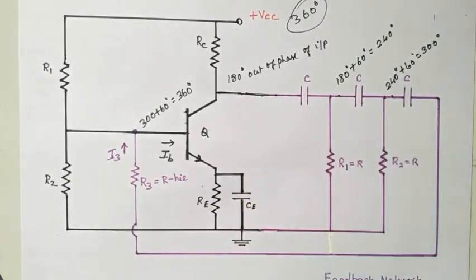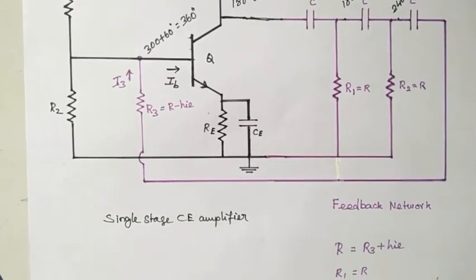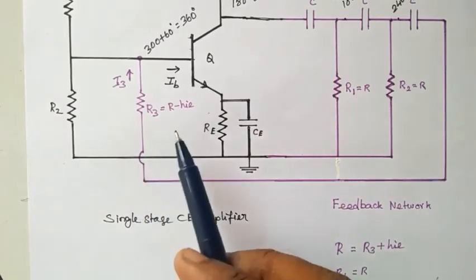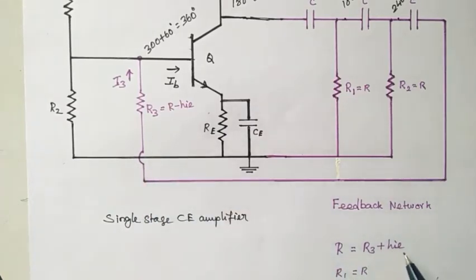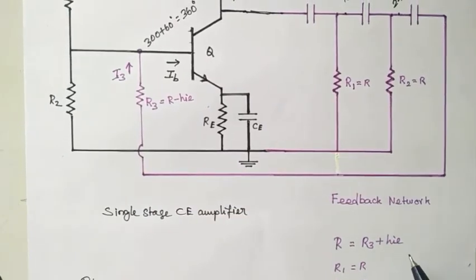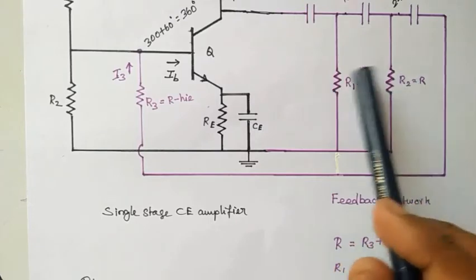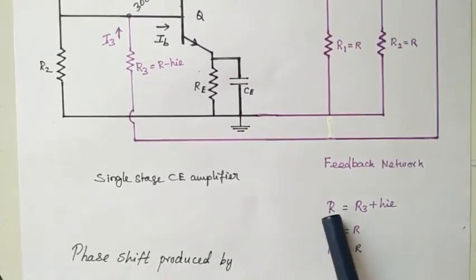Next we see what the values of R and C should be. From this diagram, I can say it is a single-stage common emitter amplifier with a feedback network. We have three R and C networks. The R value should be equal to R3 plus HIE — meaning whatever value you put for R3 should be added with the HIE of the transistor. The HIE values are provided in the data sheet of the transistor, so you have to design the R3 resistor accordingly. The summation of R3 and HIE gives R, and that R should be used in every RC network — specifically R1 and R2.